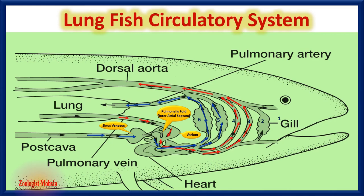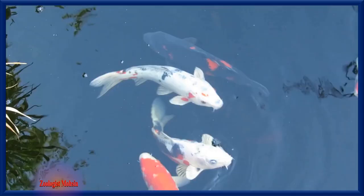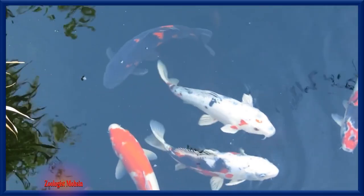So in lung fishes there is double circuit circulation, which is unique among fishes and is a step ahead toward land habitats. Hope you have understood all aspects. If you have any query or confusion, you can comment and discuss with me.